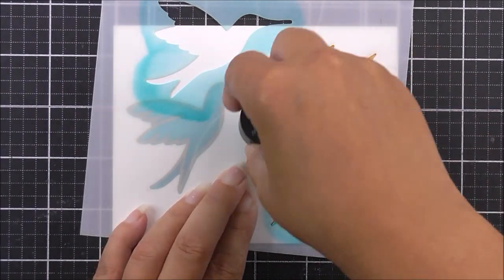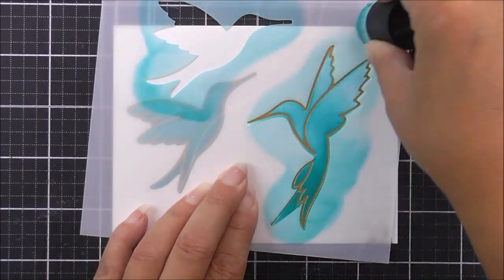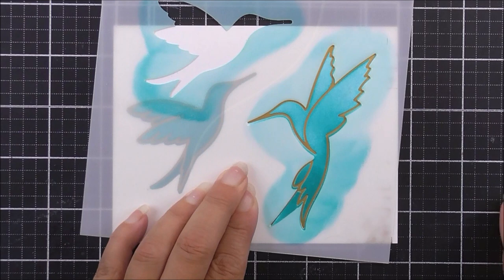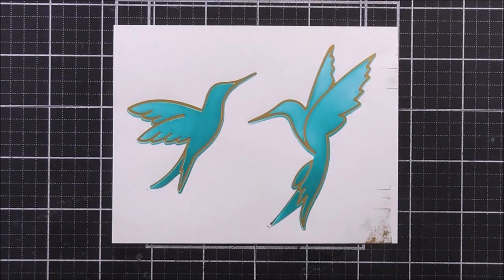I'm going to do exactly the same for the other hummingbird on the other side of the cardstock. And that is all of the layering complete.